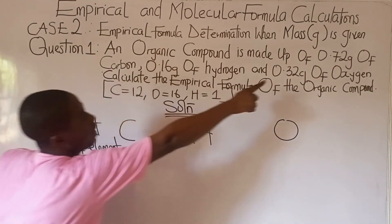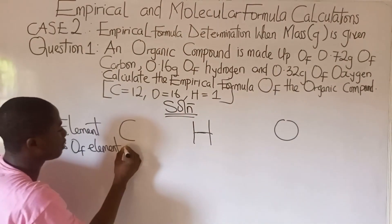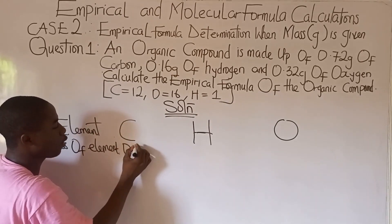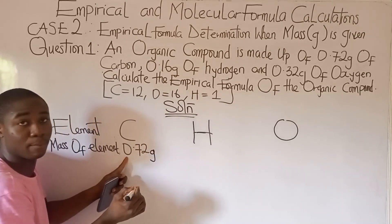For carbon, what was the mass? 0.72 grams. So I'm to write that now. 0.72 grams for carbon.